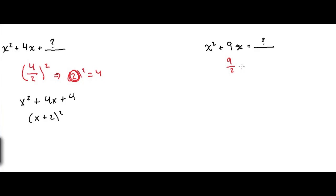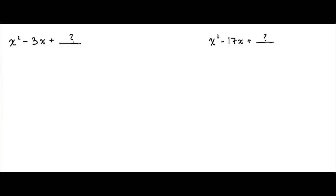For this next case, we're going to take half of the linear term again: 9 over 2. That won't reduce, so we square it. When we do that, we get 81 over 4, and that will be our constant. 81 over 4 doesn't reduce either. Writing this as a square, we're going to have x plus the linear coefficient half, all squared — so this will be x plus 9 over 2, quantity squared.